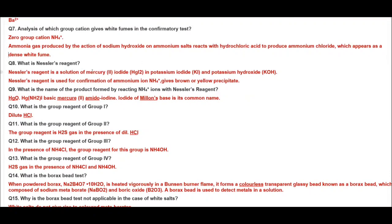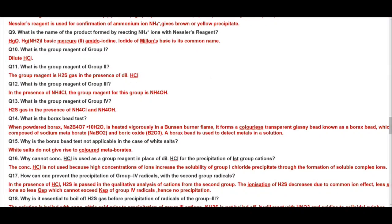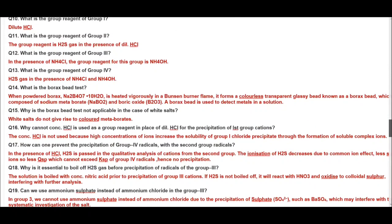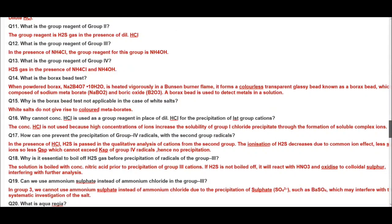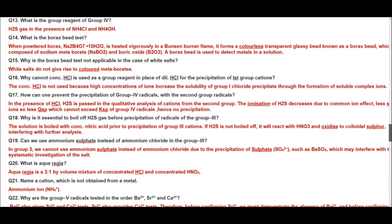What is Nessler's reagent? It is a solution of mercury 2 iodide HgI2 in potassium iodide and potassium hydroxide. Nessler's reagent is used for confirmation of ammonium ions and it gives brown or yellow ppt with ammonium salt. What is the name of product formed by reacting ammonium ions with Nessler's reagent? This is iodide of Millon's base and here the formula is given. What is the group reagent of group one? Dilute HCl. Group two, H2S in acidic medium. Group three, ammonium chloride in presence of ammonium hydroxide. Group four, H2S in ammonium solution in the presence of OH- ions. What is borax bead test? When powdered borax, that is sodium tetraborate dot 10 H2O, is heated vigorously in a Bunsen flame it forms a colorless transparent glassy bead known as borax bead which is composed of sodium metaborate and boric oxide. A borax bead is used to detect metals in solution.